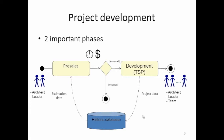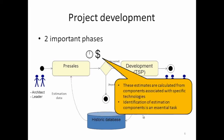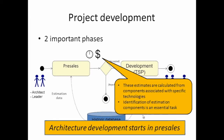The Team Software Process is very oriented towards metrics, so there's a lot of data collection during project execution. This goes into a historic database, which is then used during the pre-sales phase for estimation purposes. The architect produces a list of components associated with specific technologies, and using data from the historic database, this helps in estimating the time and cost of the project. The identification of these estimation components is an essential task in the pre-sales process, and it implies that there's architectural work that needs to be done earlier — during the pre-sales process.